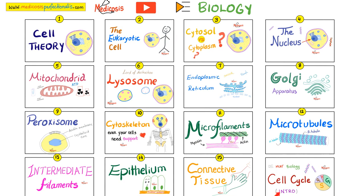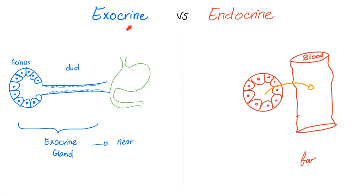Please watch these videos in order. In the last video, we described the difference between exocrine glands versus endocrine glands. Exocrine glands have ducts and convey their secretions into a nearby organ, while endocrine glands are ductless and dump their secretions into the bloodstream, which takes them to distant locations all over your body.